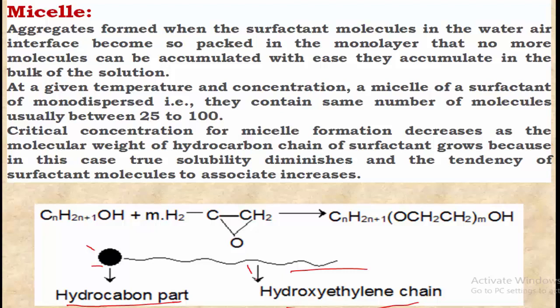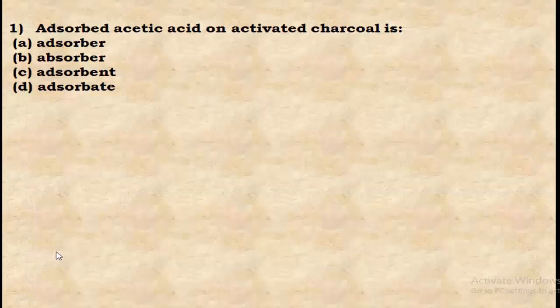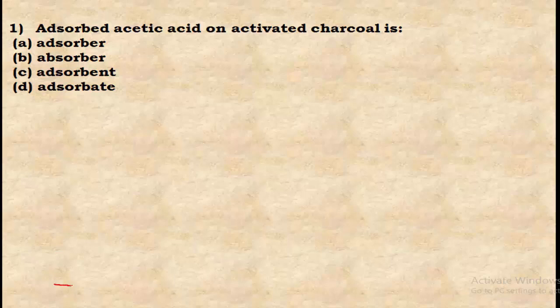Now we move to MCQs on surface chemistry. Question 1: Adsorbed acetic acid on activated charcoal — here, activated charcoal is the adsorbent and acetic acid, which is adsorbed on its surface, is known as the adsorbate. The correct answer is option D: adsorbate.